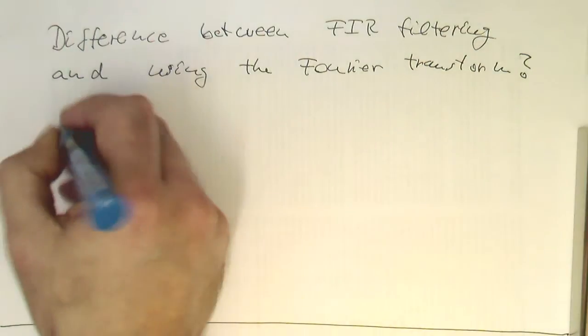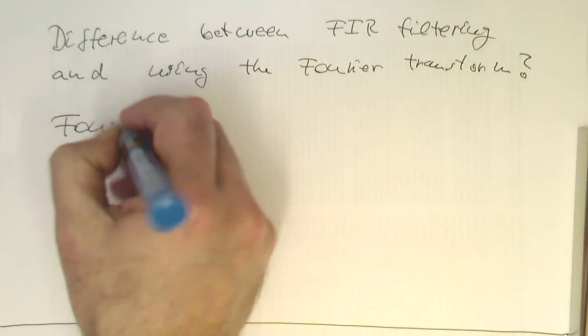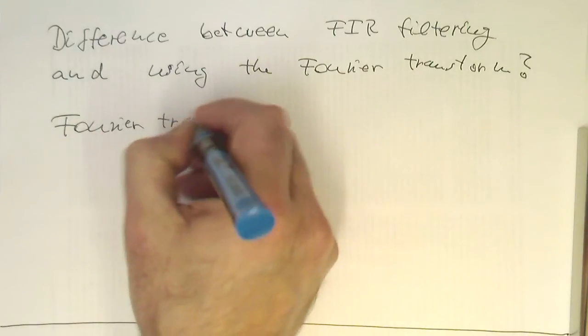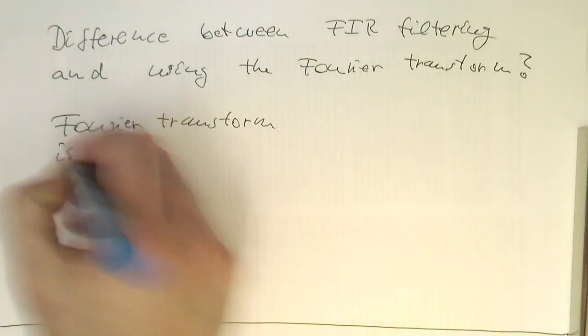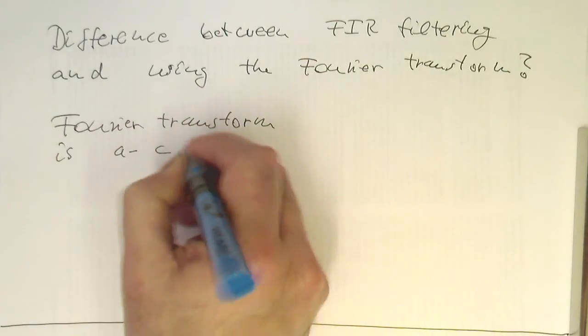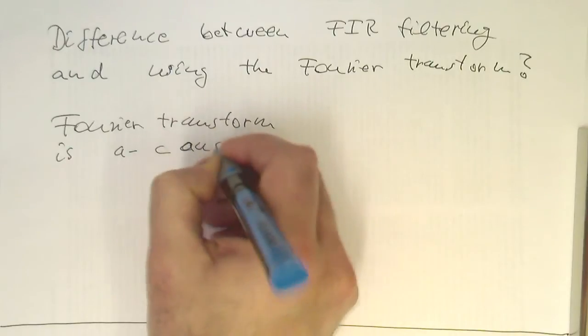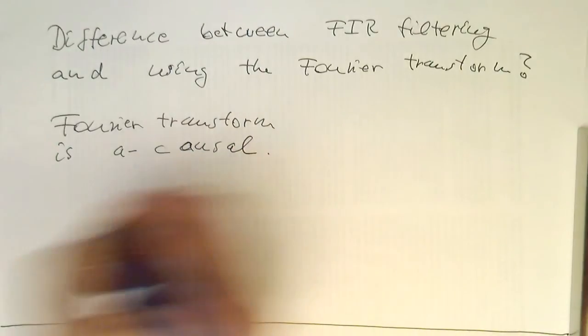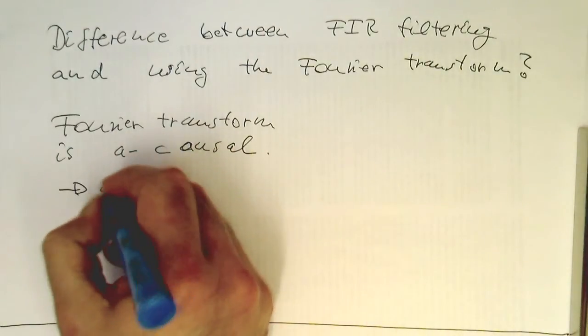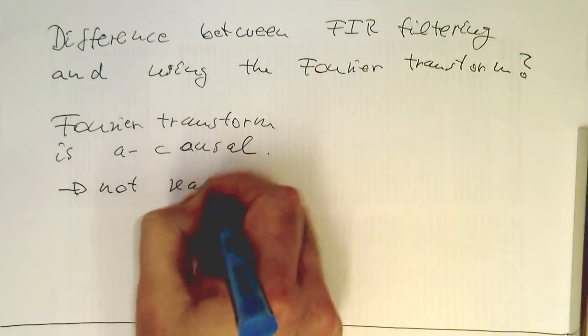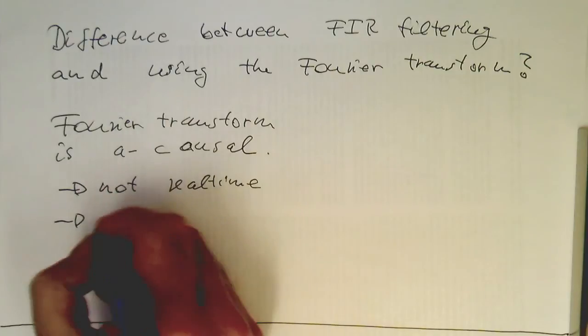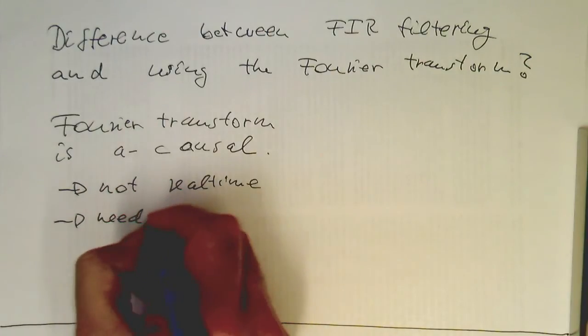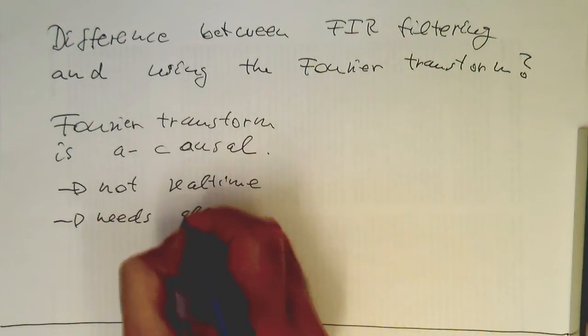The difference is that the Fourier transform is acausal. So this means it is not real-time. It needs all samples.